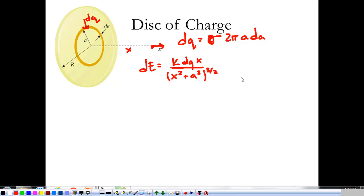So all we're going to do to find the electric field is plug this in for DQ and see what happens. So that's K times σ times 2πA·dA times X over (X² + A²)^(3/2). So now we have to integrate.